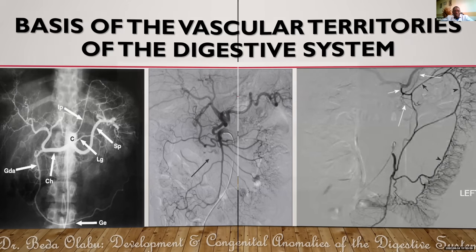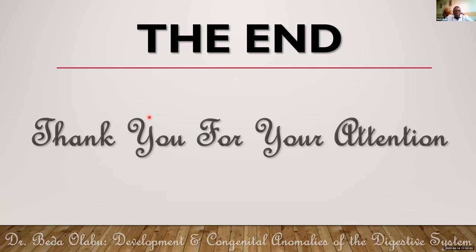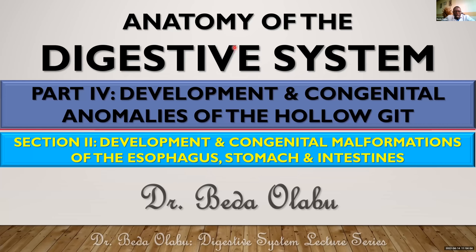That concludes the first part of this lecture on the basic concepts of development of the digestive system. The second part will focus on development and congenital malformations of specific parts of the holo-GIT — in particular the esophagus, the stomach, and the intestines in general. For now, we will stop there.